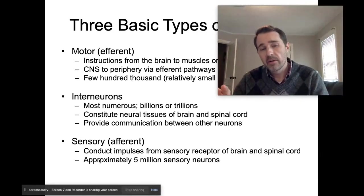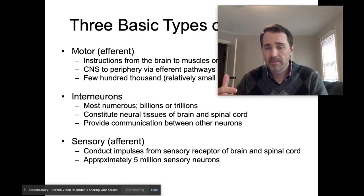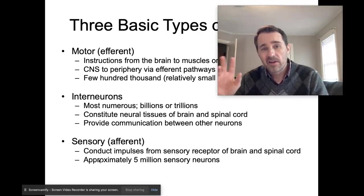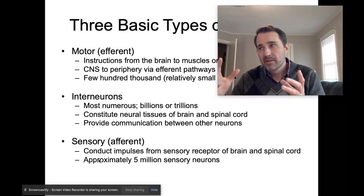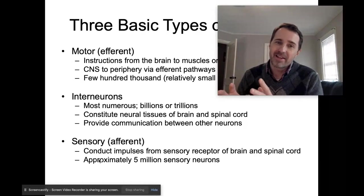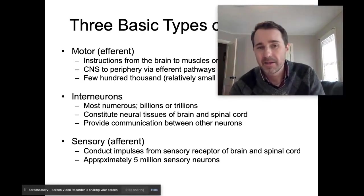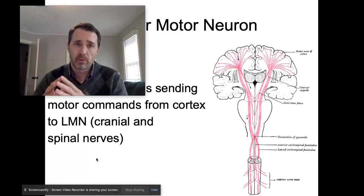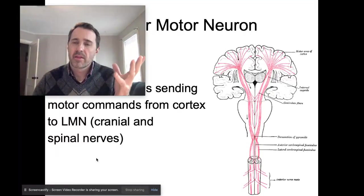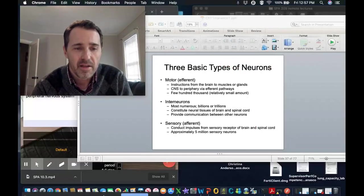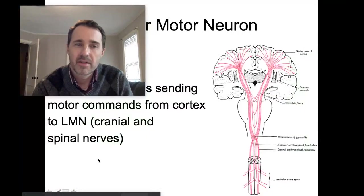Your motor or efferent neurons and your sensory or afferent neurons are myelinated through the central and peripheral nervous system. Your interneurons are not myelinated, and the cortex — that part of the brain we spent a lot of time on when discussing the various areas of the cortex — is all interneurons, all gray matter, unmyelinated. Before we get to the cranial nerves, let's define the motor pathways, the descending pathways of the central nervous system, referred to as the upper motor neurons.